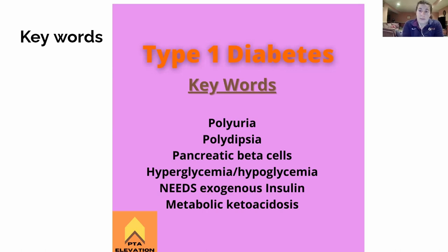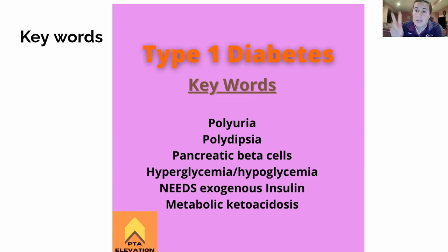With type 1 diabetes patients, they need that insulin or else they're done in a couple of days. Any patient with a metabolic disease — that's another term to know. Metabolic ketoacidosis is what I was talking about earlier, where blood sugars go so high that they end up in a coma.